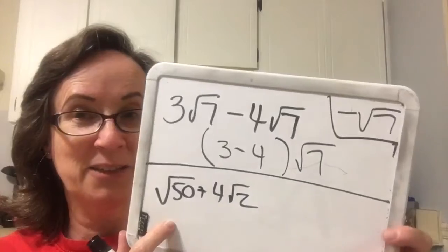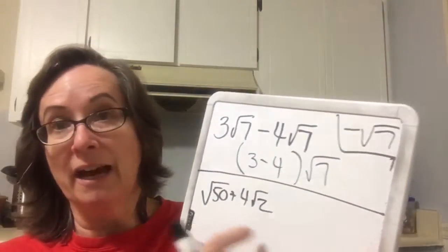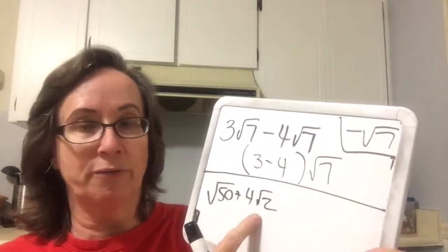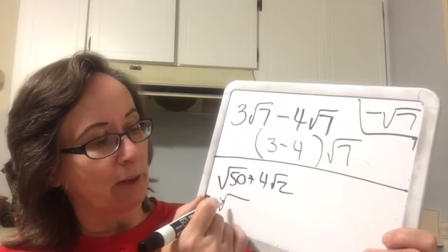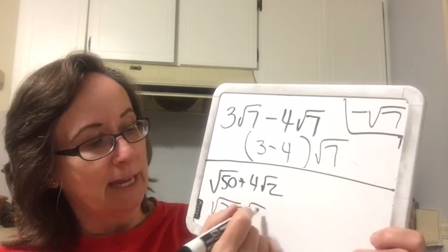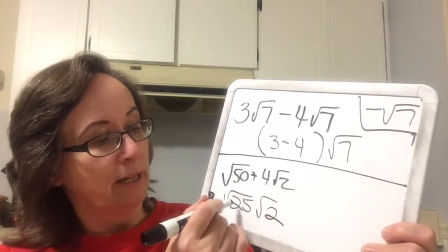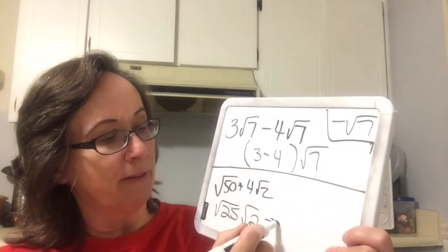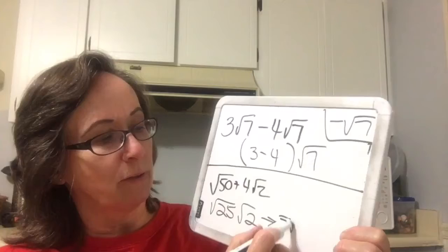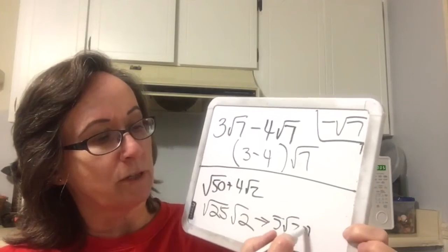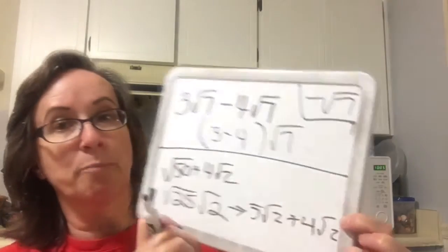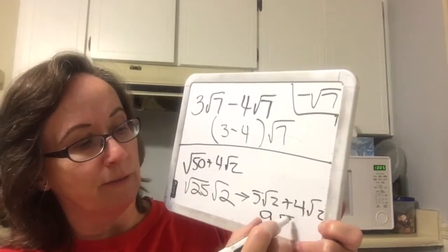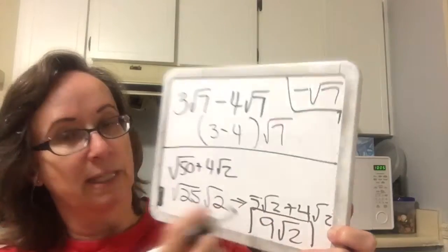Now we get to the fun stuff. These are not alike, but if we simplify this one, would it have a square root of 2? We're going to break this up into a perfect 25 and a 2 left over. The square root of 25 is 5, giving us 5 square root of 2 plus 4 square root of 2. Since they are both now square root of 2s, we end up with 9 square root of 2.